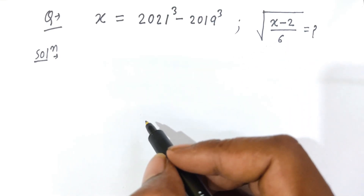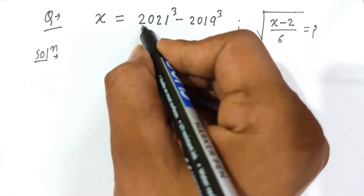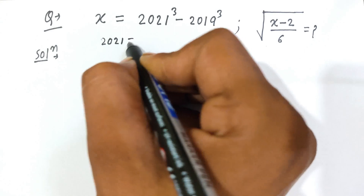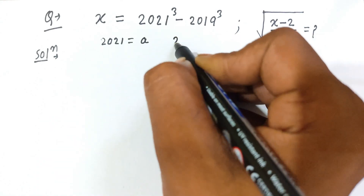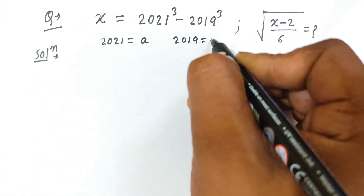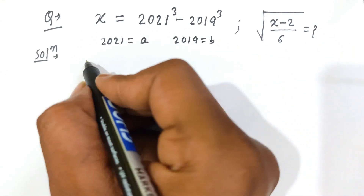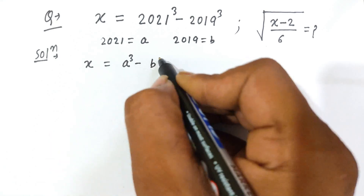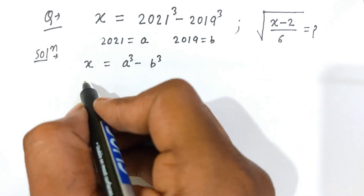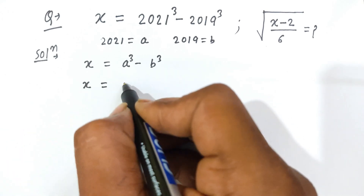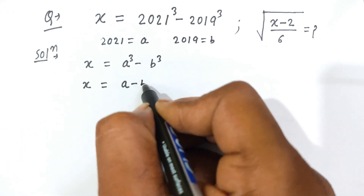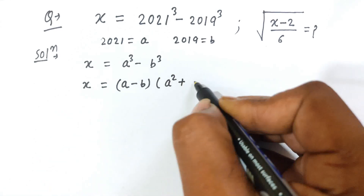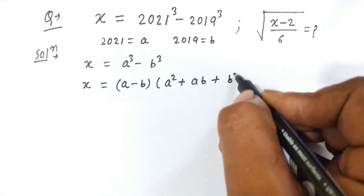Let's see students, this problem we will now solve. Let 2021 be equal to a and 2019 be equal to b. Then x is equal to a cube minus b cube, and we know that the algebraic identity of a cube minus b cube is (a minus b) multiplied by (a squared plus a times b plus b squared).